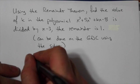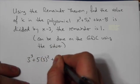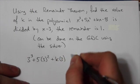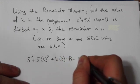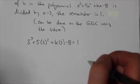So we're going to plug in 3 cubed plus 5 times 3 squared plus k times 3, there's my unknown, minus 8. I know that that should be equivalent to 1. That's what the remainder theorem says.